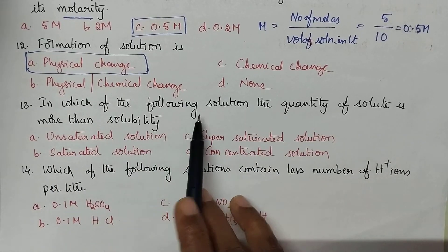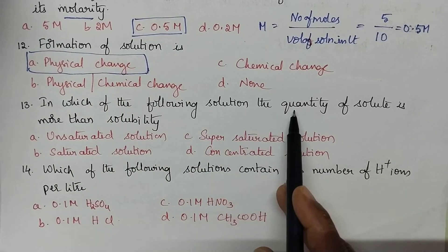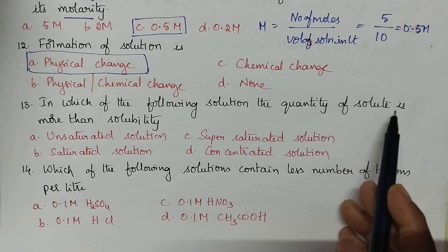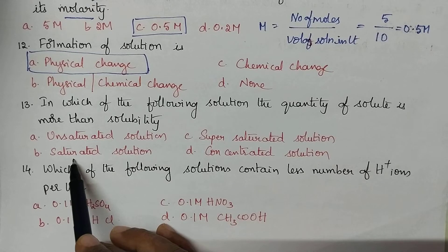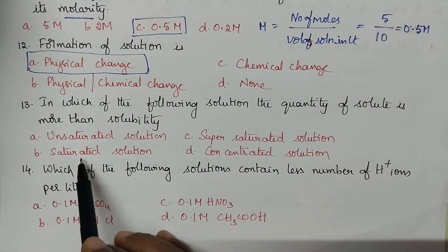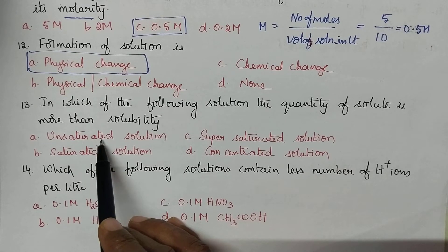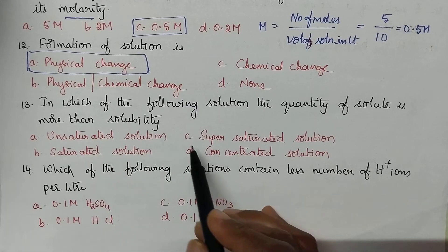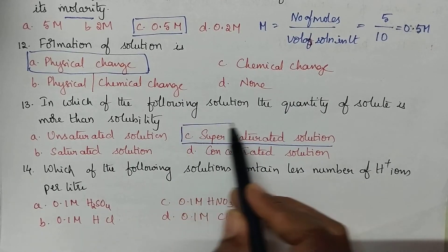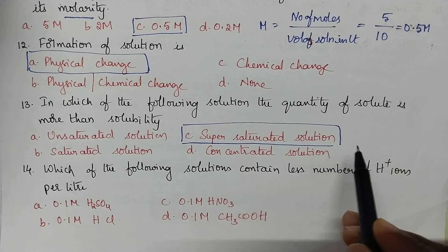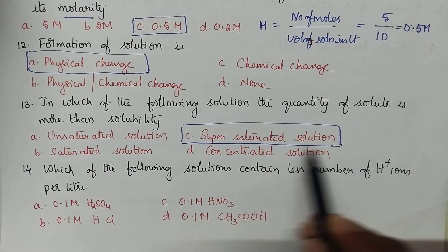In which of the following solutions is the quantity of solute more than solubility? In a saturated solution, the maximum amount of solute is present in dissolved state. An unsaturated solution contains less solute. A supersaturated solution contains solute in excess of solubility. Option C is the right answer.